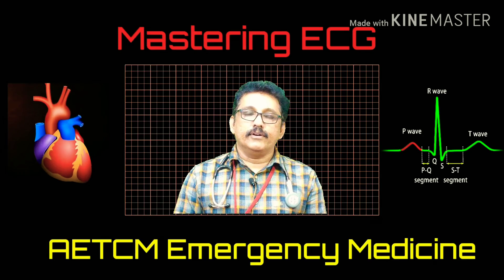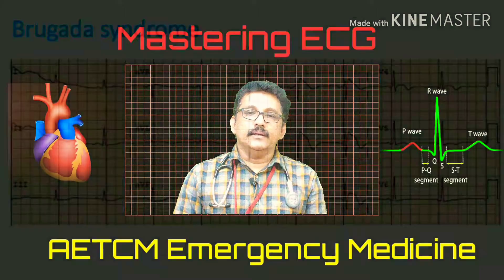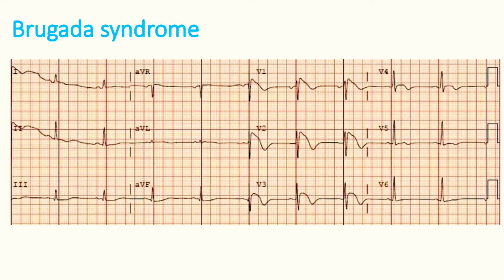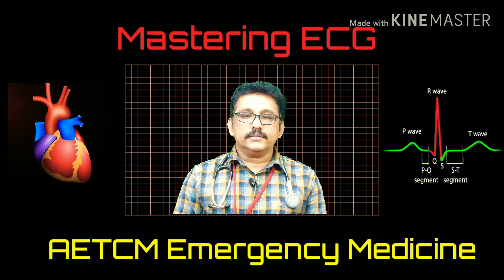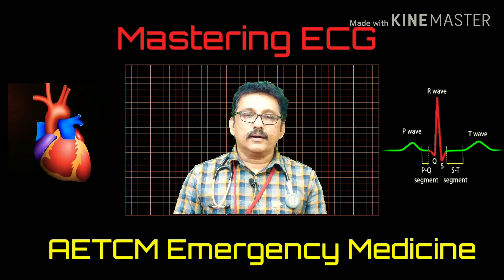Another syndrome where you get T-wave inversion is something like RBBB — that is called the Brugada pattern. If the patient has a history of sudden cardiac death or arrhythmias, then you can call it Brugada syndrome. In this ECG you can see minimal ST elevation in V1, V2, V3, followed by T-wave inversion after the ST elevation. If there is no prior history or family history of sudden death, it is called Brugada pattern.